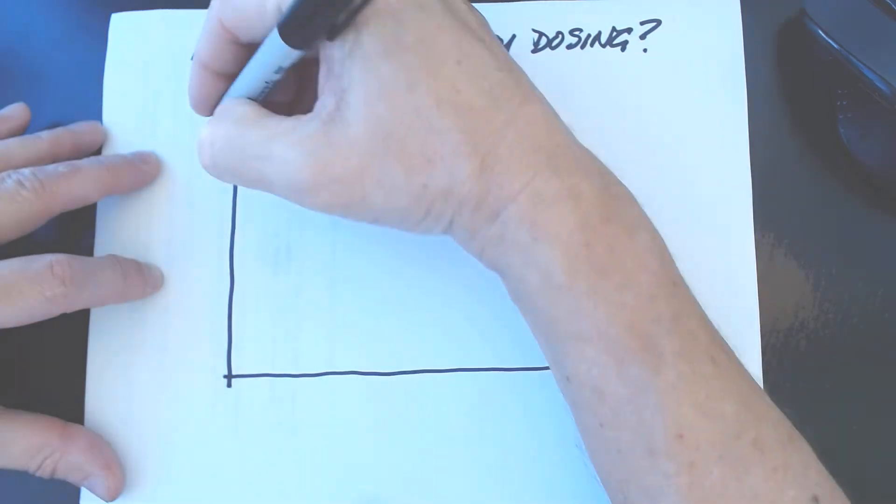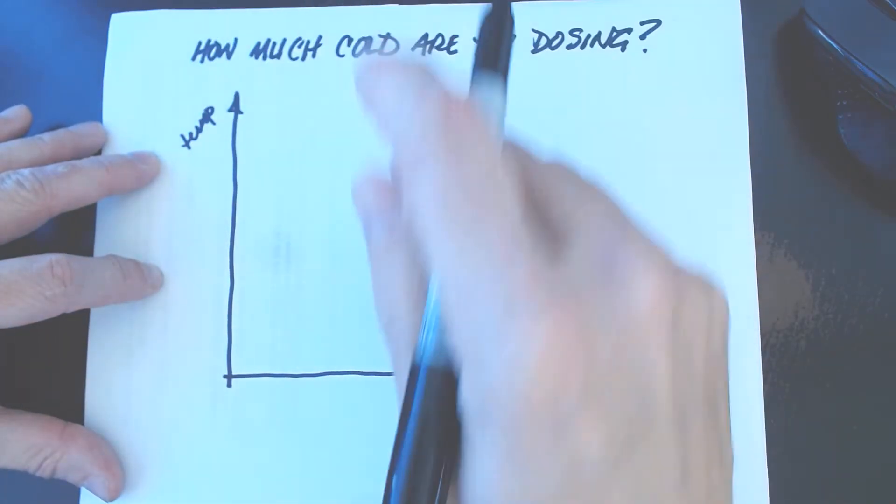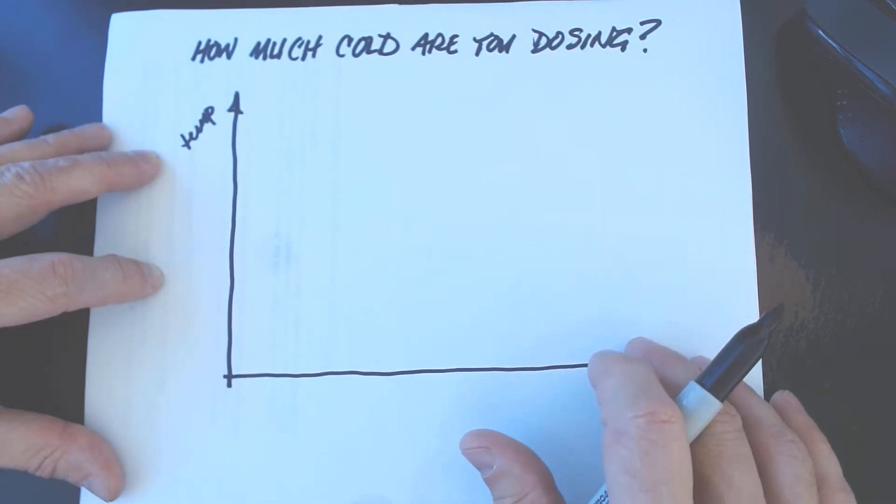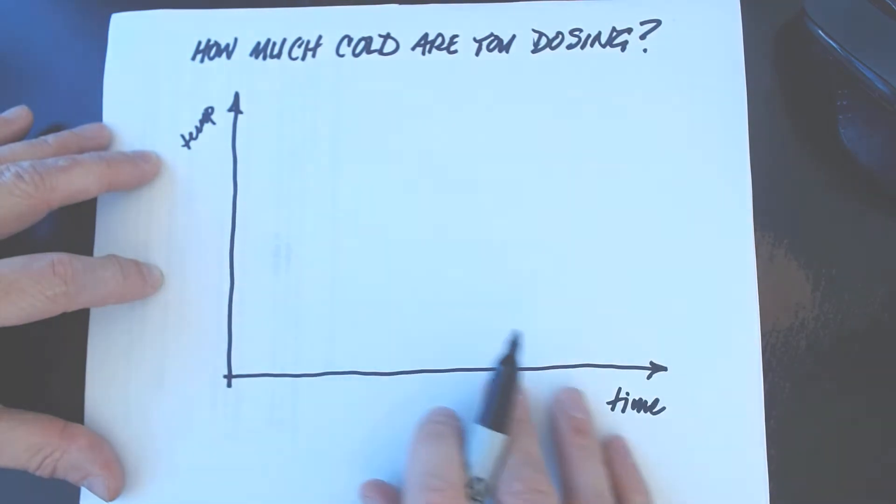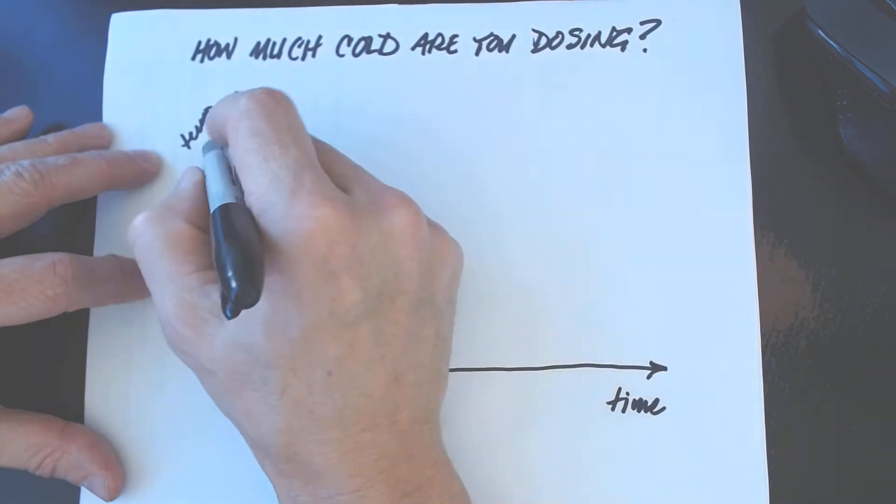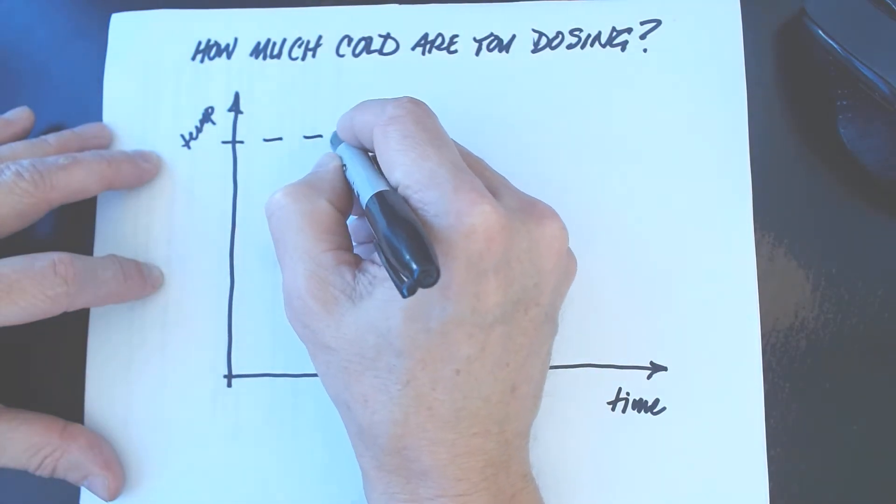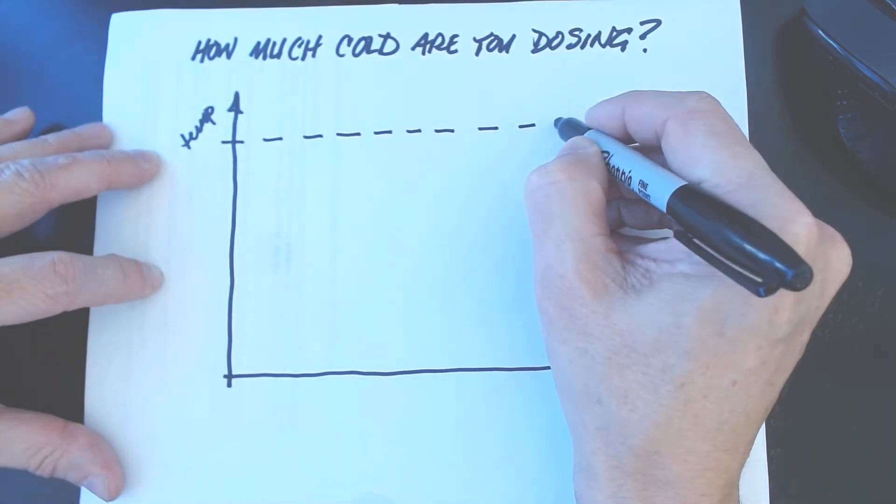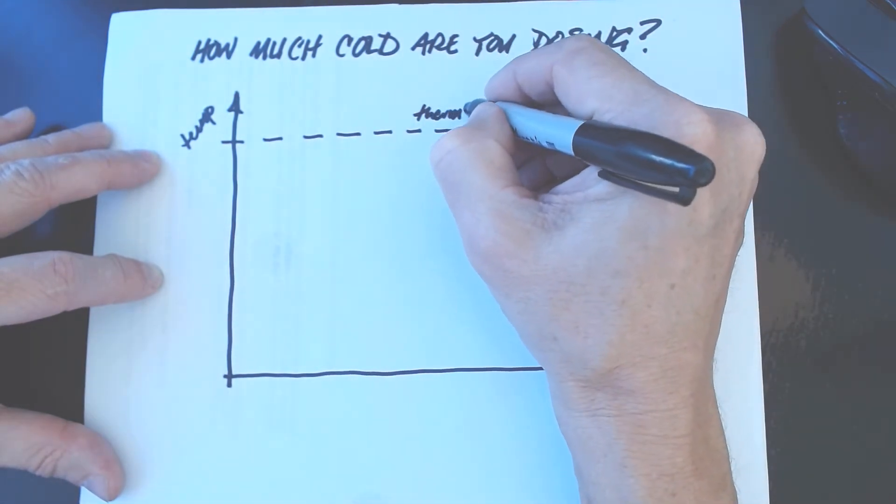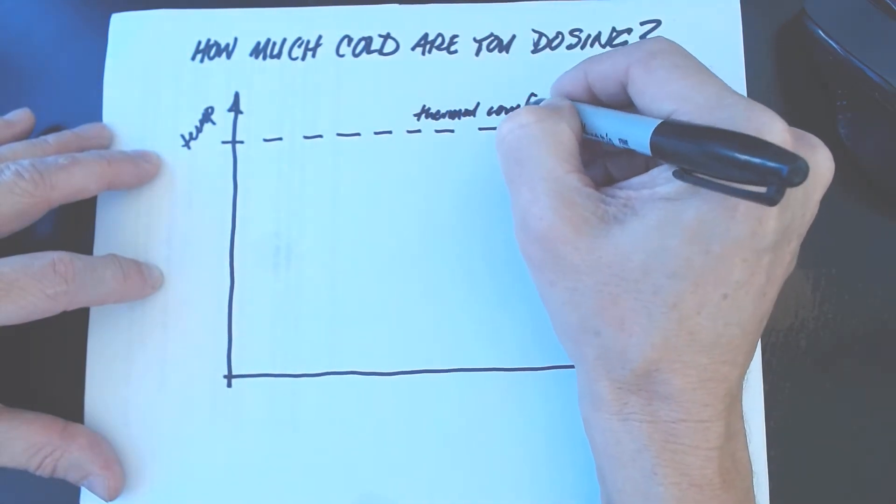So I thought up a new scale. It has time and it has temperature. Basically the colder the temperature and the longer the time, the more you're dosing. But then I realized that that wasn't sufficient. Everyone has their own type of response. So critical to understanding how much cold you're getting is something that I call the thermal comfort line.